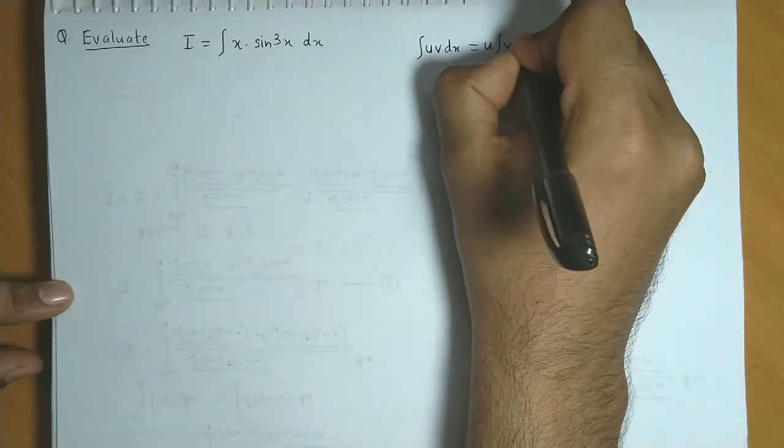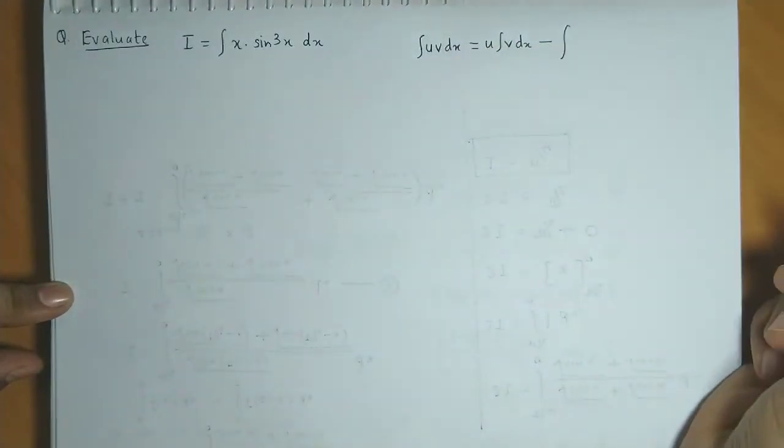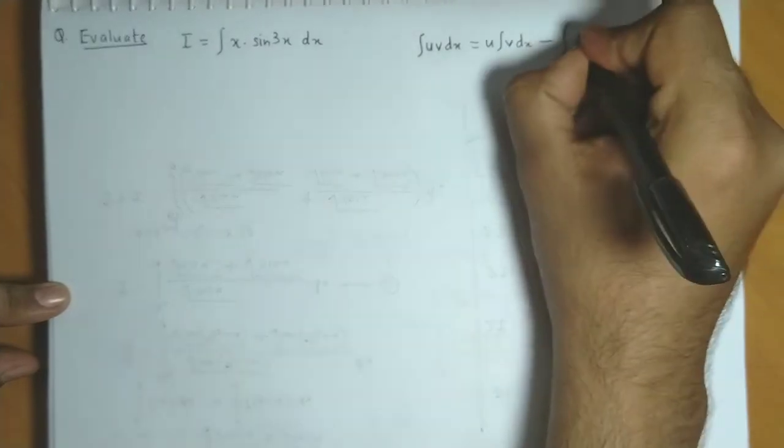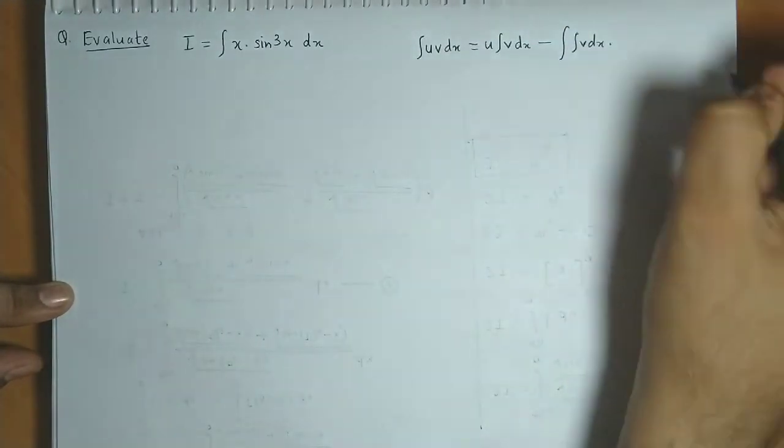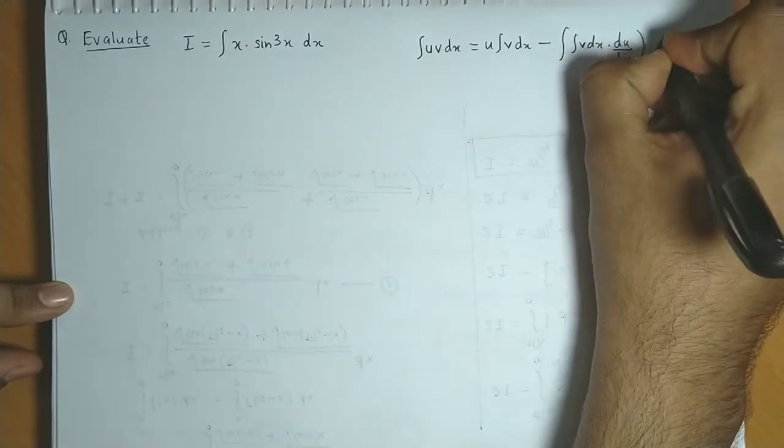u times integration of v minus integration of integration of v into derivative of u dx.